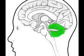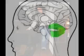Situated at the base of the brain is the cerebellum, also known as the little brain. It controls motor movement, coordination, balance, equilibrium, and muscle tone.